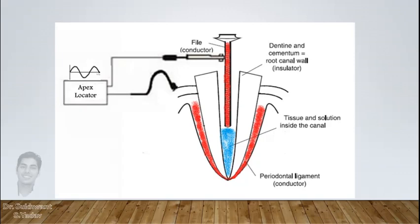When this tooth capacitor is attached to a battery in apex locator, current flows between file and periodontal ligament through irrigant. The flow is opposed by irrigant that is recorded as capacitive reactance.